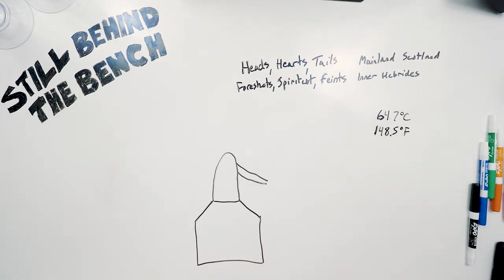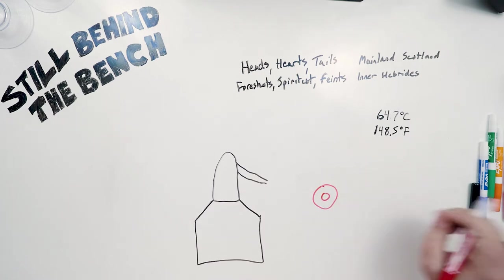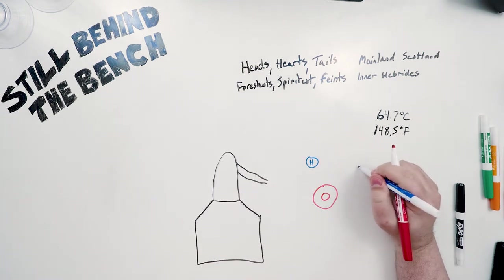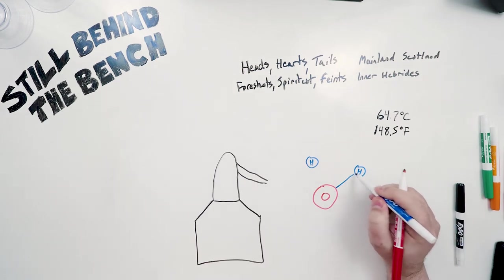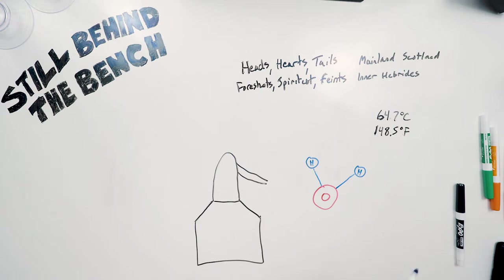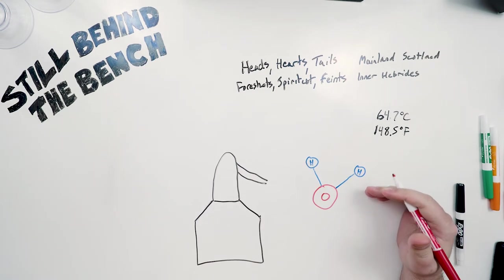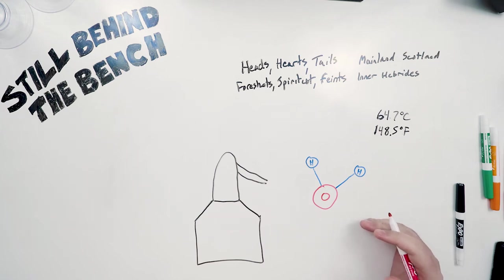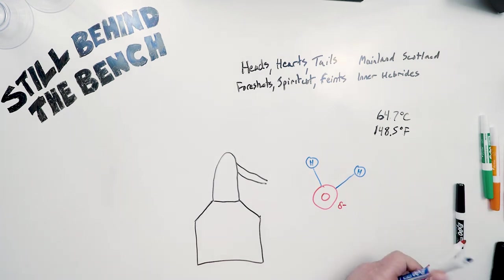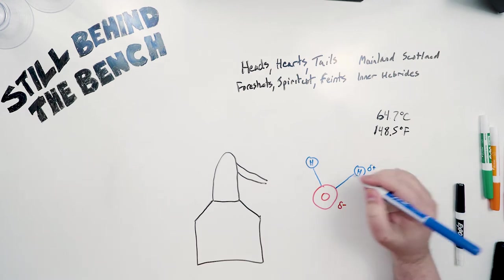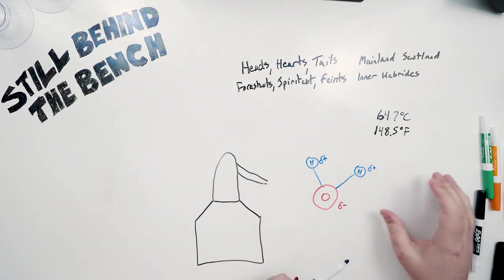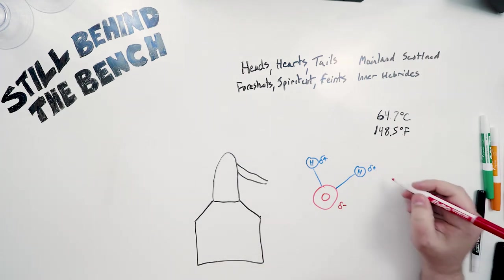So in hydrogen bonding, we'll start with water. We have our oxygen molecule and then we will have two hydrogen molecules. And because of the electronegativity of oxygen, what's called a dipole moment forms and that's essentially one side of the molecule becomes more charged than the other. And in this case, the oxygen side becomes more negative and the hydrogen sides become more positive.